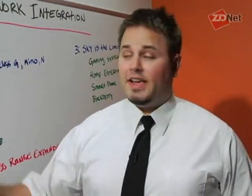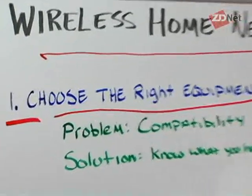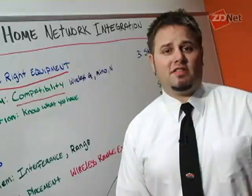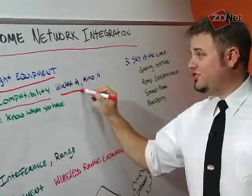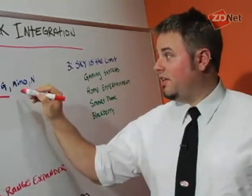So once you're in the store, it's important to choose the right equipment. The big problem that you're going to run into is compatibility. There's so many different kinds of wireless out there. There's Wireless G, which is one of the older versions of wireless that most devices are compatible with.